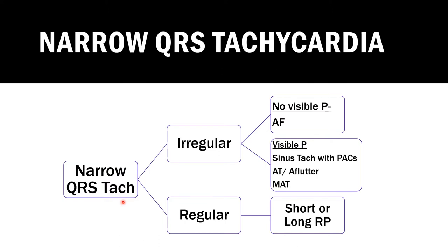You are given a narrow QRS complex tachycardia, meaning QRS complexes less than 120 milliseconds and rate more than 100 beats per minute. To arrive at the diagnosis, you need to determine if the QRS complexes occur at a regular or irregular interval. If the QRS complexes occur at irregular intervals, you need to figure out if there are visible P waves. If there are no visible P waves, then it is atrial fibrillation.